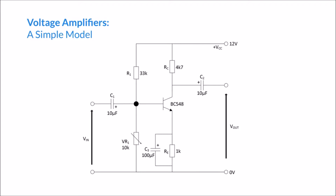Hello and welcome to this video on voltage amplifiers, where we're going to move towards a simple model for representing amplifier circuits. The purpose of any amplifier circuit is to take an input and create an output. If it's an amplifier, the input might be very small, but the output should be greater. The increase from input to output is what we call gain in amplifiers.